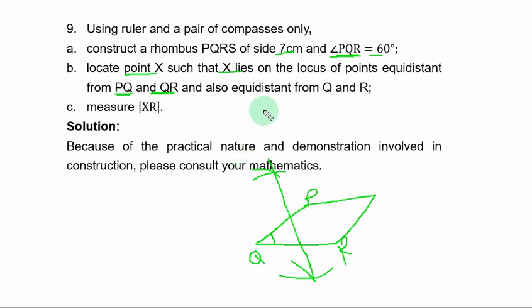Now, also equidistant from Q and R. Just from Q and R. So from that point, if you put it here, you can draw one arc here, then you draw one here.